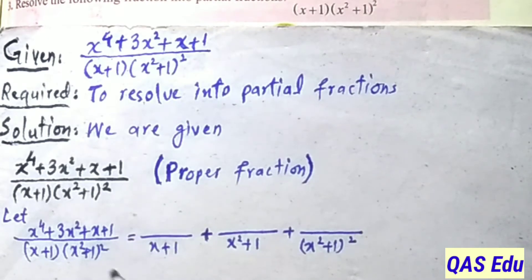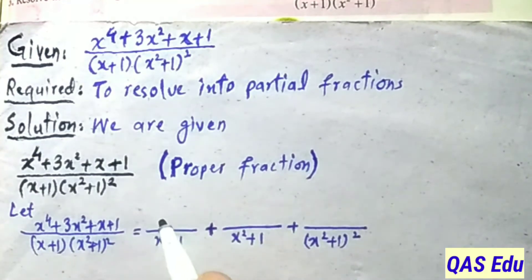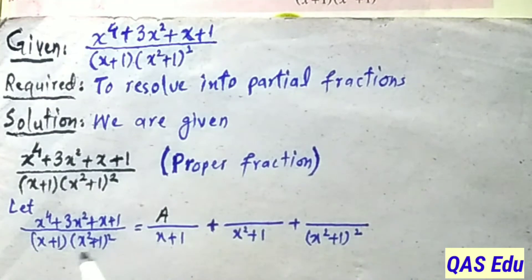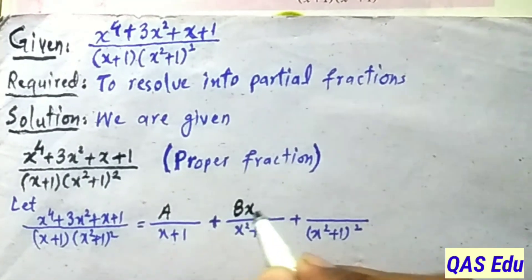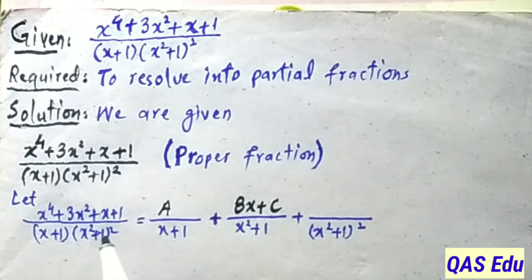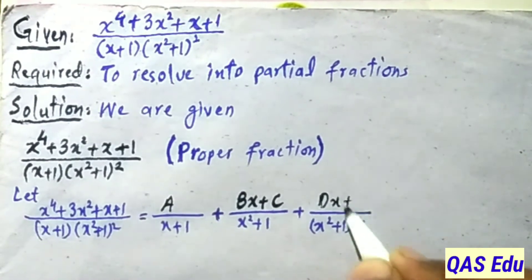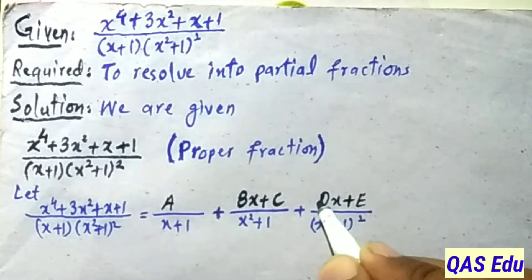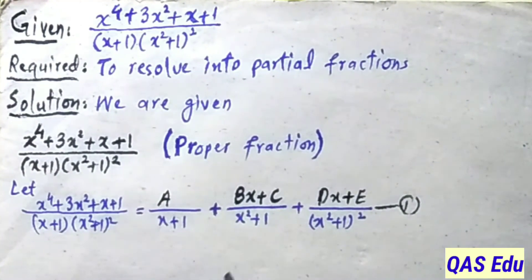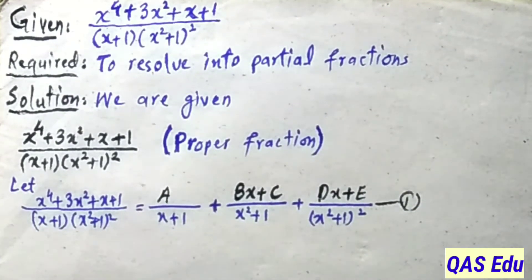Now setting up the partial fractions: for the linear factor we place constant A in the numerator. For the quadratic term with single power we place two constants B and C, giving Bx + C. For the repeated quadratic factor we place two constants D and E, giving Dx + E.